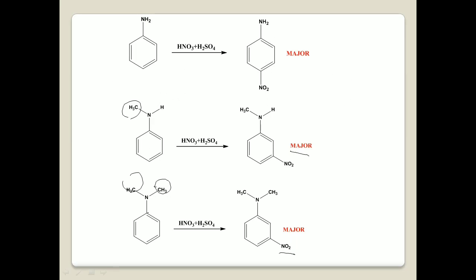In nitration of N,N-dimethylaniline, since it is the most basic compound, ready protonation takes place — more of the N,N-dimethylaniline gets protonated, converting it to an electron-withdrawing group: N+(CH3)2H. Higher concentration of N,N-dimethylaniline gets protonated because it is a very strong base. In the case of aniline, which is a weak base, only some concentration gets protonated — that's why we still get 47% meta and para as the major product for aniline.